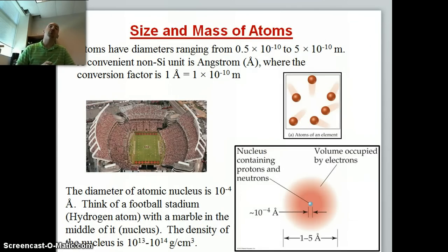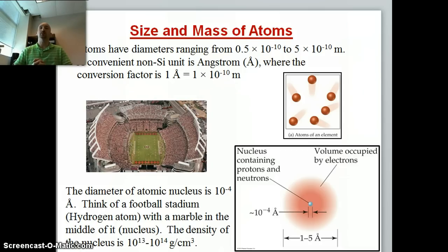Now we can turn our attention more to the atom, looking at the size and the mass of the atoms. We can describe the atom as the smallest particle of an element. The diameter of an atom can range from about 0.5 times 10 to the minus 10 to about 5 times 10 to the minus 10 meters. Chemists describe these distances in terms of angstroms. We can use a conversion factor of 1 angstrom is equal to 1 times 10 to the minus 10th meters.